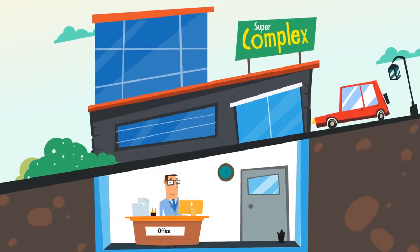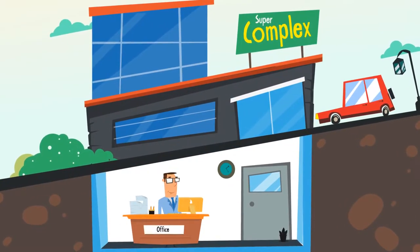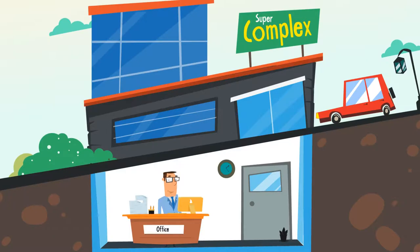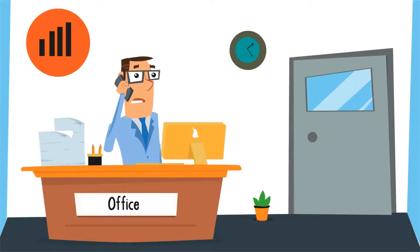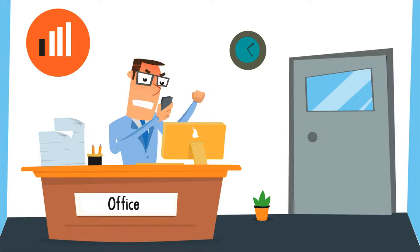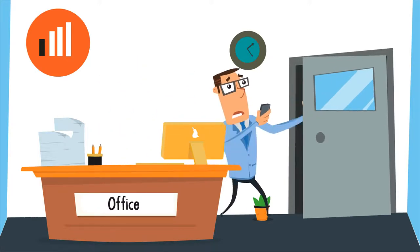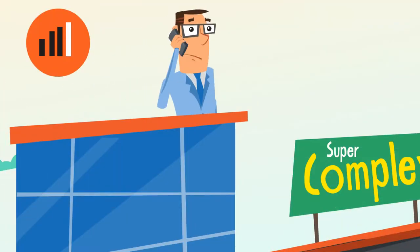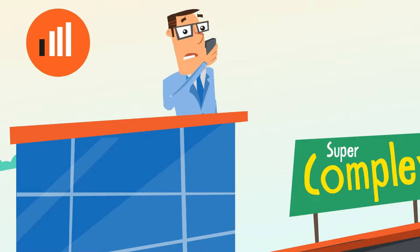His growing business required a bigger office space, and thus he got his office shifted to a basement. But later, he found out that mobile signals were weak in the basement. He got frustrated with regular call drops. He had to rush out to make or receive calls.